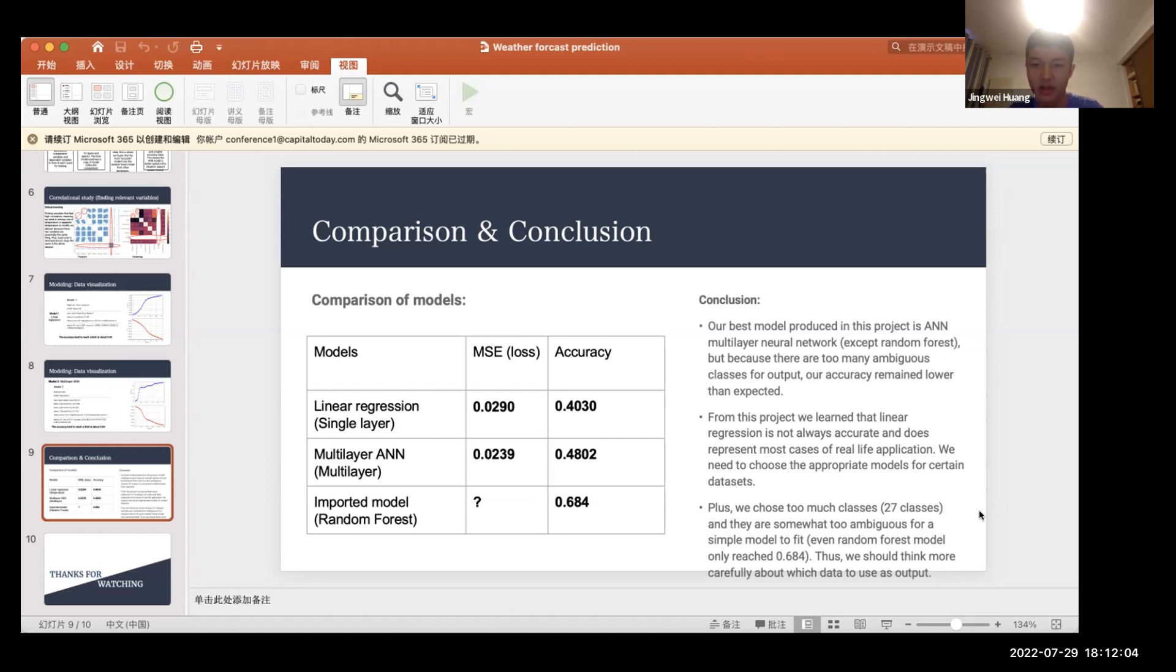Also, we chose too many classes, even 27 classes for this model. And they are somewhat too ambiguous for a simple model to fit. And even the most advanced random forest model only reached about an accuracy of 68%.